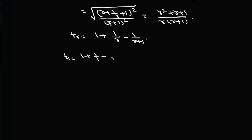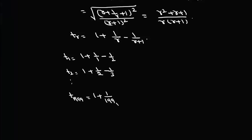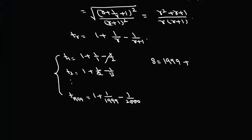Writing out the terms: t₁ = 1 + 1/1 − 1/2, t₂ = 1 + 1/2 − 1/3, ..., t₁₉₉₉ = 1 + 1/1999 − 1/2000. Adding them all up, the 1 appears 1999 times giving 1999, and the intermediate fractions cancel telescopically.